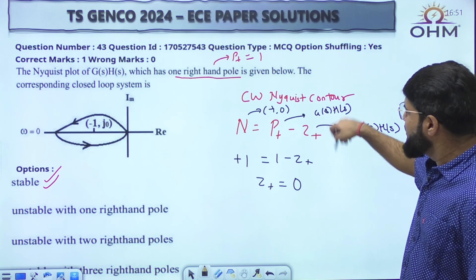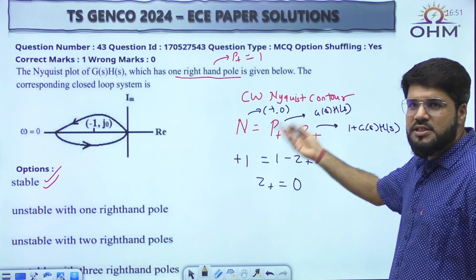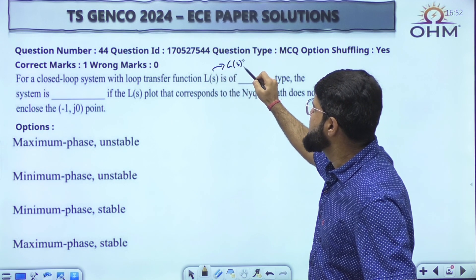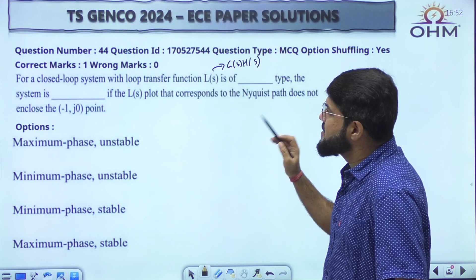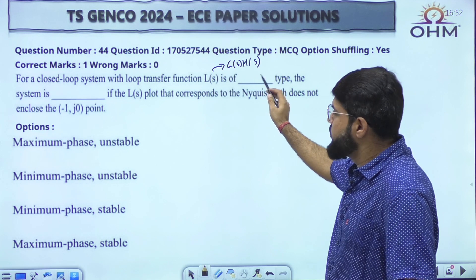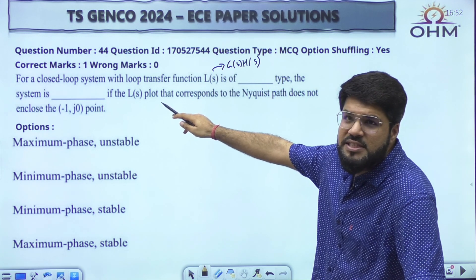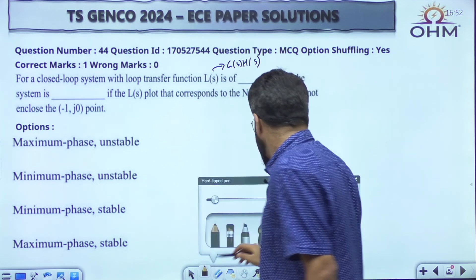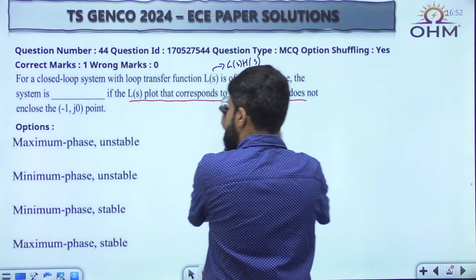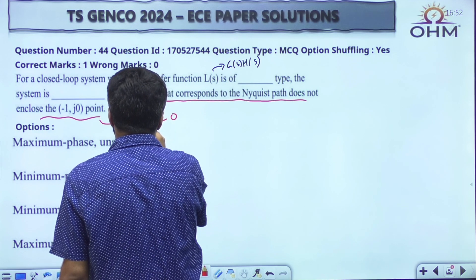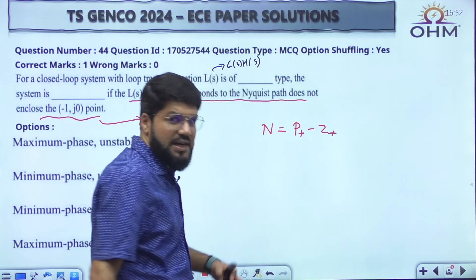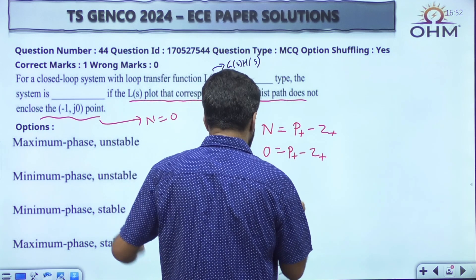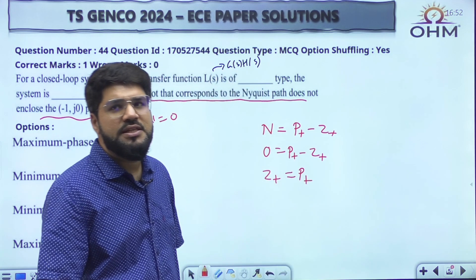Next question: for a closed-loop system with loop transfer function L(s), known as G(s)H(s), of dash type — the system is dash. You have to fill in whether it is minimum or maximum phase type, and stable or unstable. The Nyquist plot corresponding to the Nyquist path does not encircle minus 1 comma 0 — there is no encirclement, so N is 0. Taking the clockwise Nyquist contour case: N = P+ minus Z+. To comment on stability, if Z+ is 0 then the system is stable, and for that I need P+.